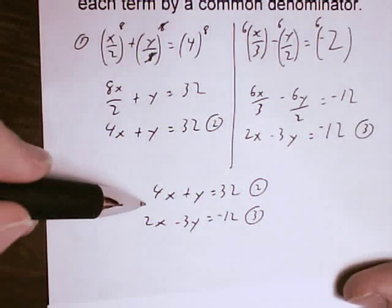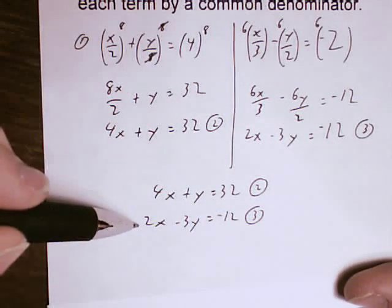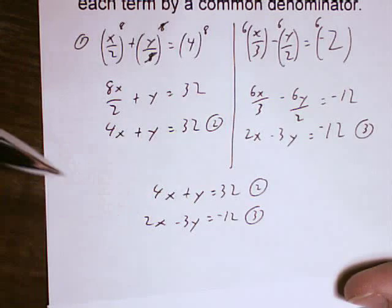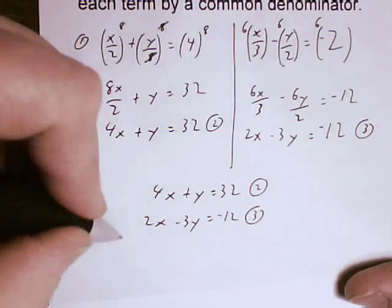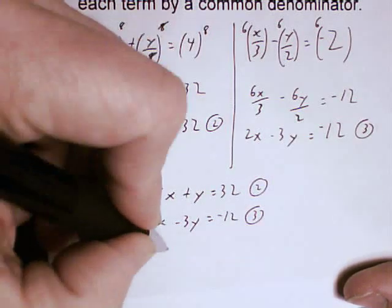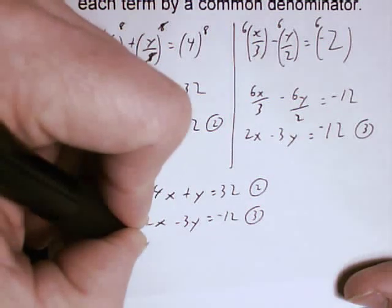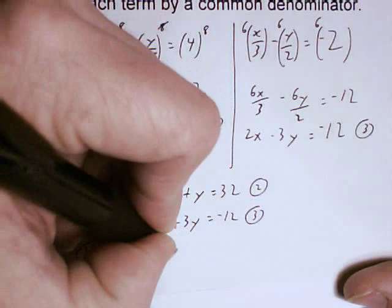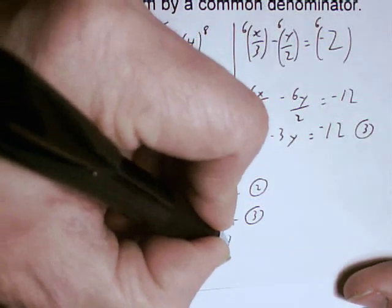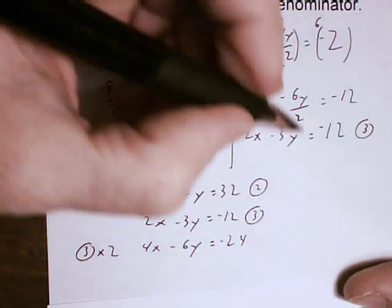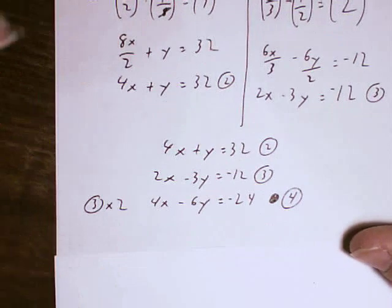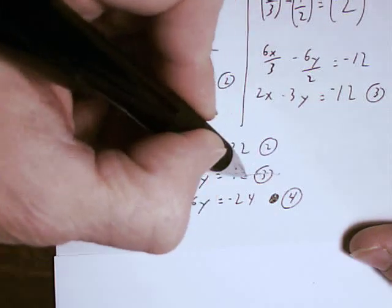I kind of like the fact that I can just multiply this equation here by a 2 to give me a 4 and eliminate the x. So I'm going to multiply equation 3 times 2. So if I do that, that gives me 4x minus 6y equals negative 24. I'm going to name that equation 4. So I don't need that guy anymore.